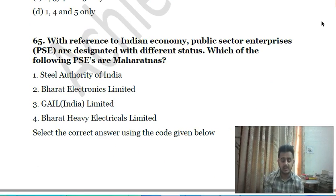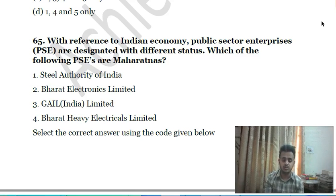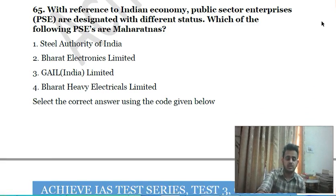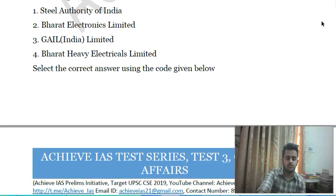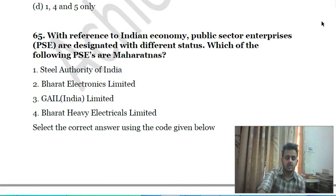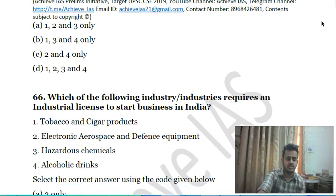Sixty-fourth question: with reference to the Indian economy, public sector enterprises are designated with different statuses. Which of the following public sector enterprises are Maharatna? First, Steel Authority of India; second, Bharat Electronics Limited; third, GAIL Limited; fourth, Bharat Heavy Electricals Limited. Choose the correct answer.